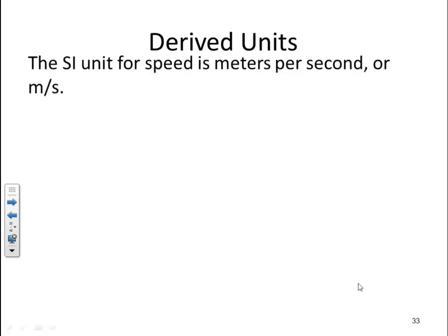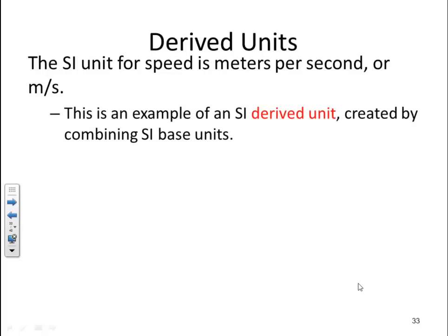We mentioned earlier about derived units. Let's talk about this in further detail. The SI unit for speed is meters per second. This is an example of an SI derived unit created by combining SI base units. Remember we have seven base units, everything else is a derived unit. So we've taken the units of distance and time and made a new derived unit of speed in the form of meters per second.